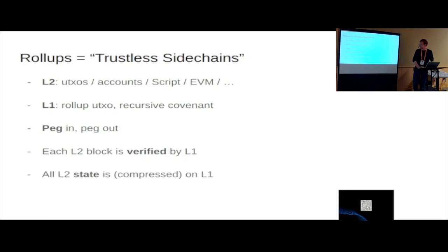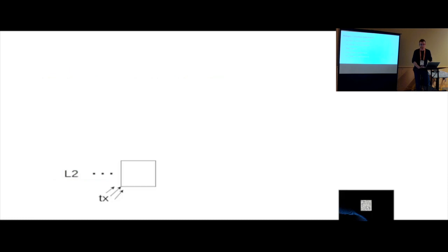And also the layer two state is on layer one in a compressed form. So this solves the data availability issue. So just by looking at layer one, we're able to reconstruct the latest layer two state. And this enables things like a unilateral withdrawal of someone who is censored by the rollup provider.